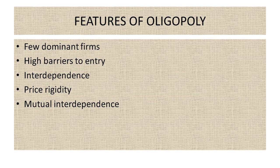Oligopoly markets are characterized by a small number of large firms, often referred to as oligopolists, dominating the industry. These firms have a significant market share which gives them substantial influence over market outcomes. The next feature is high barriers to entry. Barriers to entry in oligopoly are typically high, making it very difficult for new firms to enter the market and compete with existing firms, such as through patents or licenses.